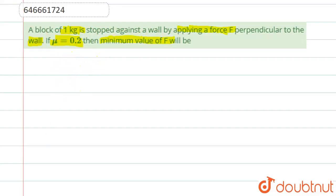So basically we have to find out F. What is happening in this question is that let's suppose this is a wall and there is a block over here. So we have to draw the block also. So let's suppose this is the block.